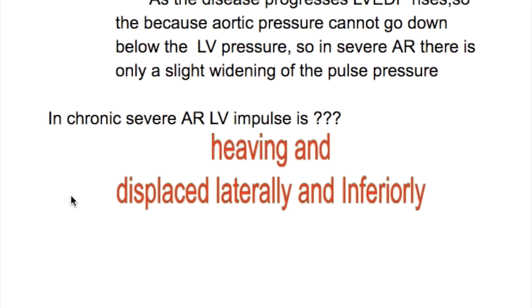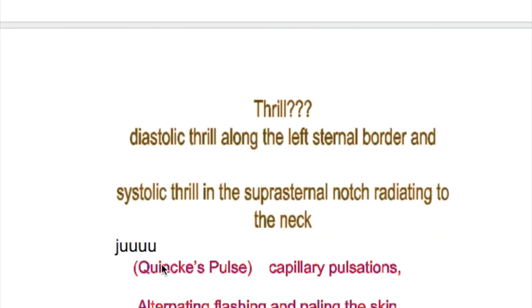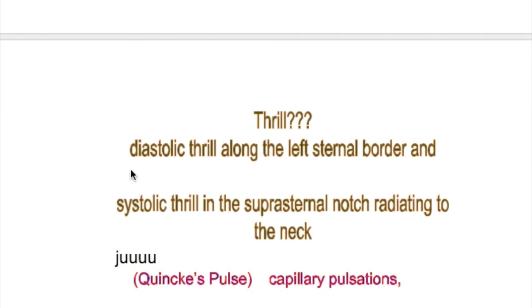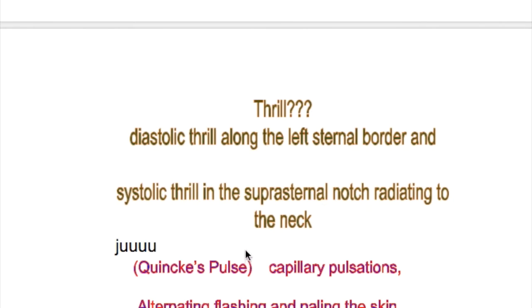In severe aortic regurgitation, the left ventricular impulse is heaving and displaced laterally and inferiorly. There are two thrills: a diastolic thrill along the left sternal border and a systolic thrill in the suprasternal notch radiating to the neck.